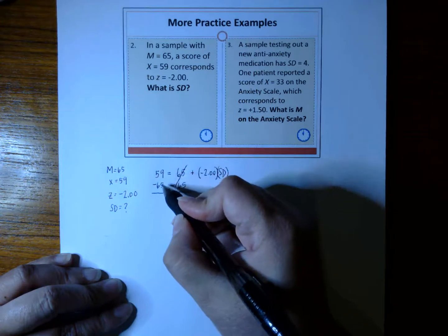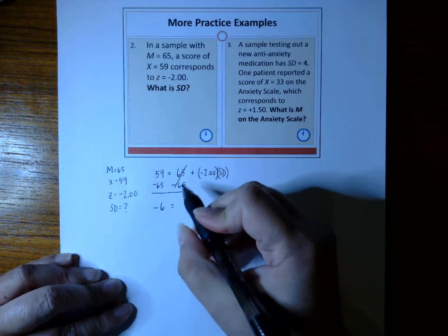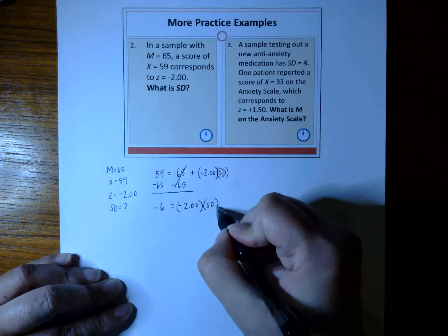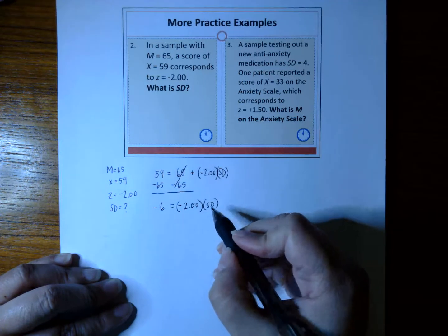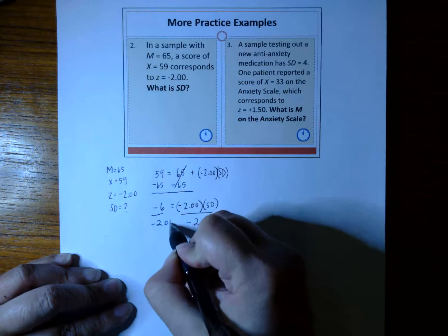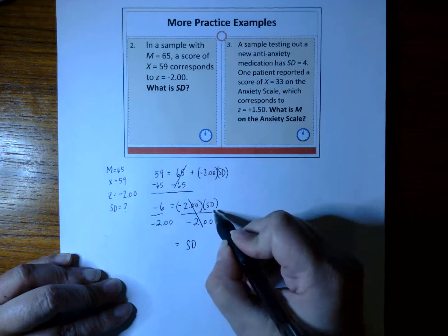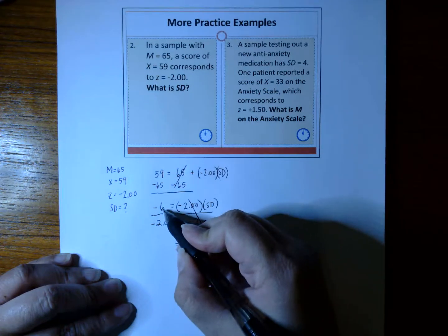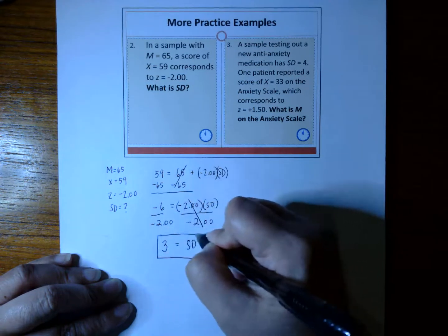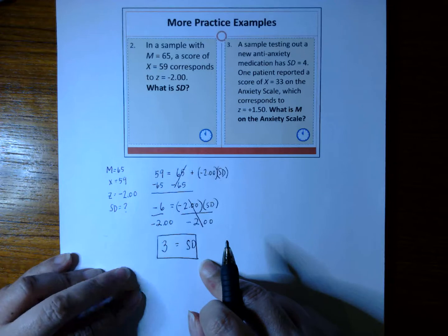Then we're left with 59 minus 65 gives us a negative 6. Then all we have left over here is a negative 2 times SD. What do we need to do to get the SD by itself? Well, we need to divide both sides by a negative 2. These two are cancelled out, and then all we got left on this side is our standard deviation. And a negative 6 divided by a negative 2 gives us actually a positive 3. So standard deviation equals 3.